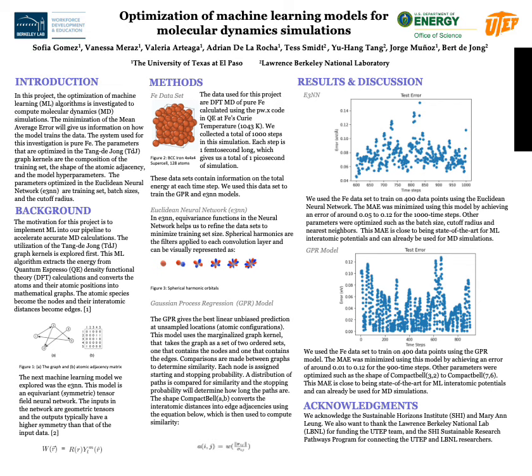Using the Euclidean neural network, we refined our datasets to minimize the training set size needed to train the model. The spherical harmonics are the functions applied to each convolutional layer. Using the Gaussian process regression model applied to Tang's kernel, we measured the similarity between each graph at each time step. The nodes in each graph have a starting and stopping probability. The compact shape was optimized and converts the interatomic distances into edge adjacencies, where W is a decaying weight function and sigma is the length scale factor between atoms i and j.